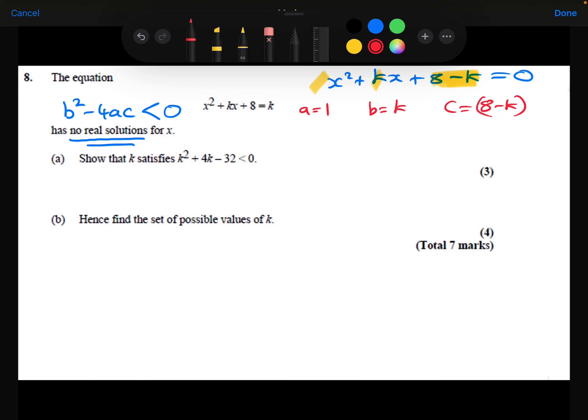Right, so let's substitute these into the discriminant then. Let's substitute them into the b squared minus 4ac. So b squared is k squared minus 4 times a, which is 1, times c, which is 8 minus k. And that should be less than 0.